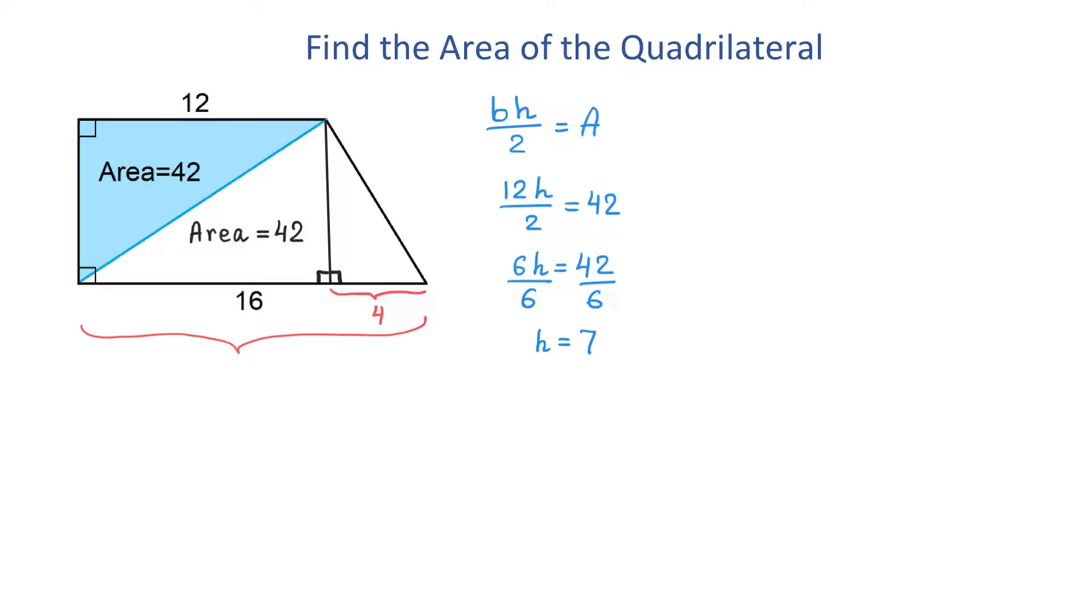So, we just found that this side of the quadrilateral is equal to 7. Then, the left side of this small triangle is also equal to 7. And now, to find the area of this triangle, we will multiply the base by the height and we will divide the result by 2.